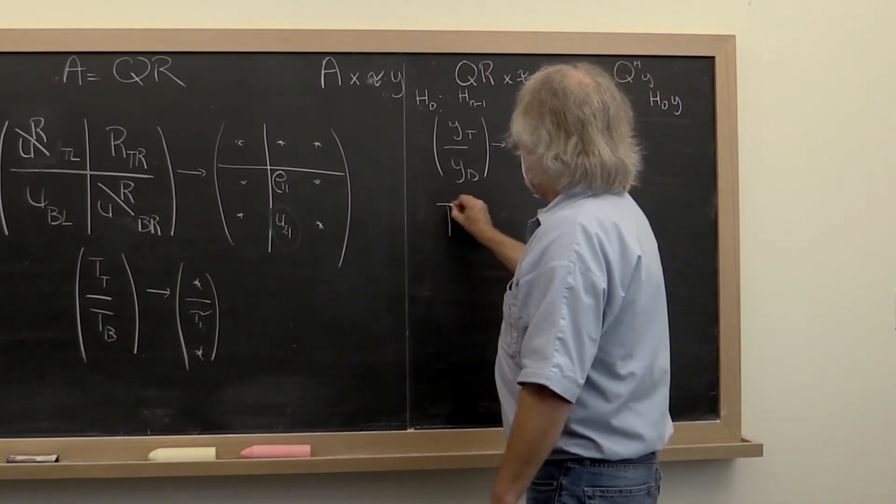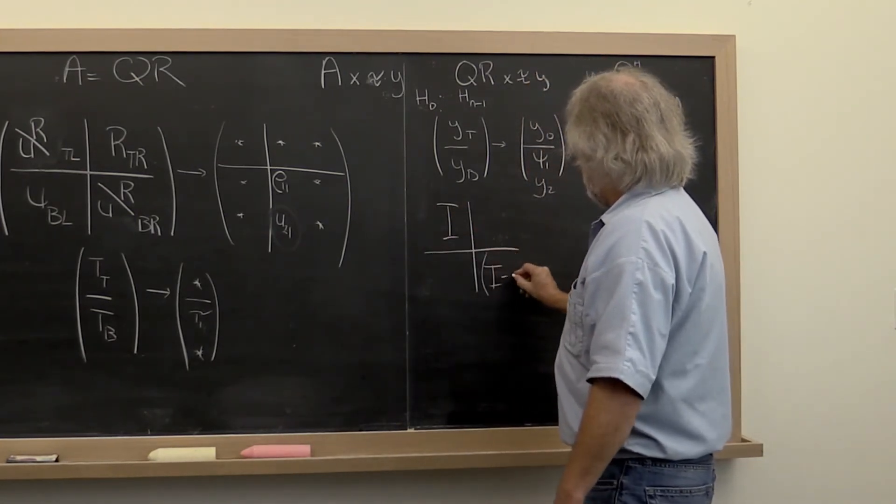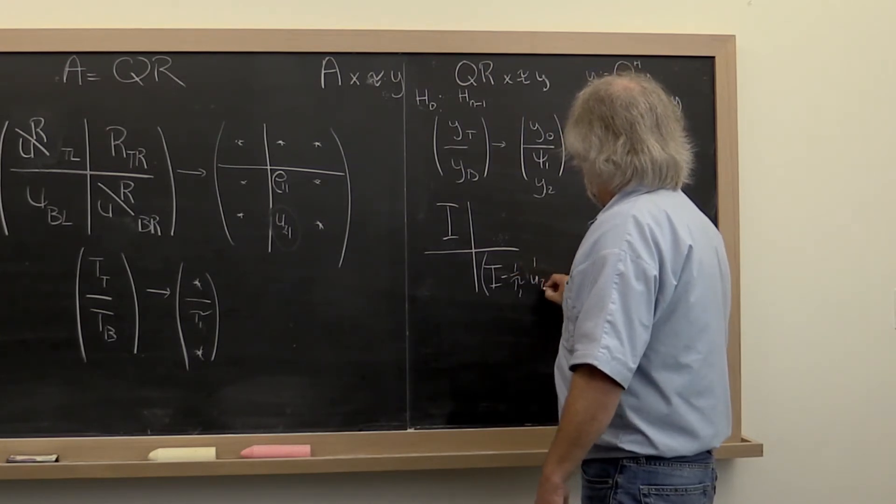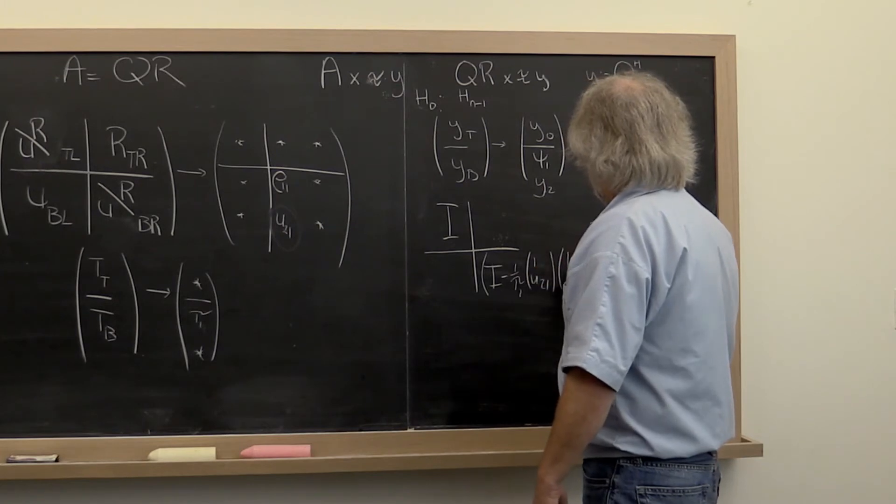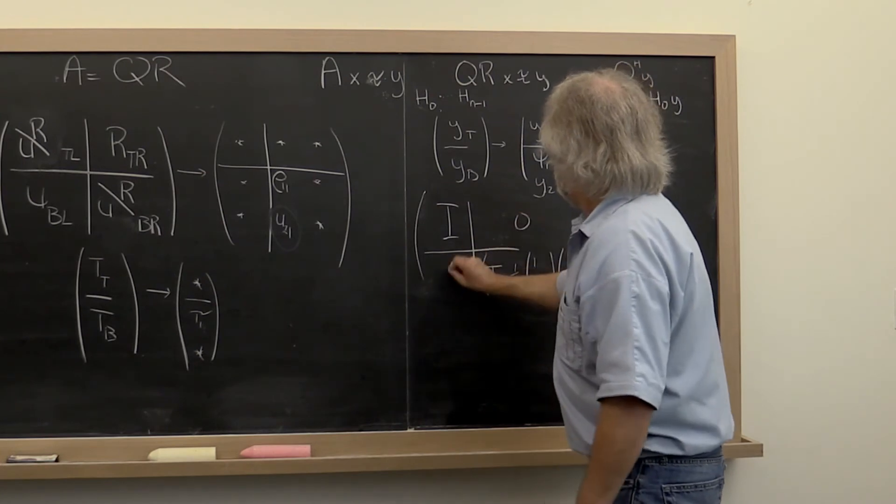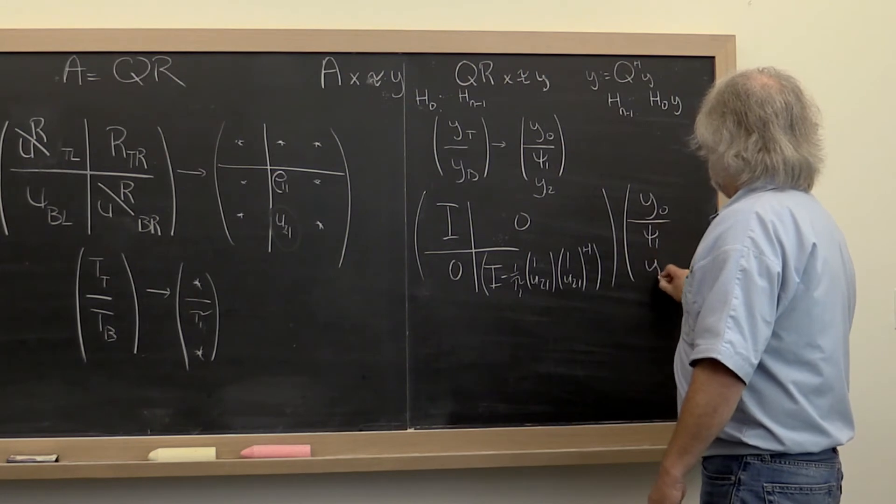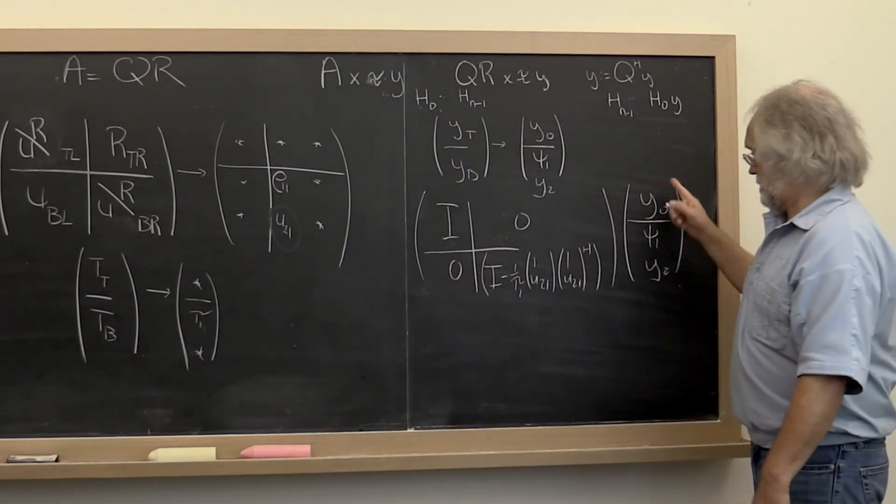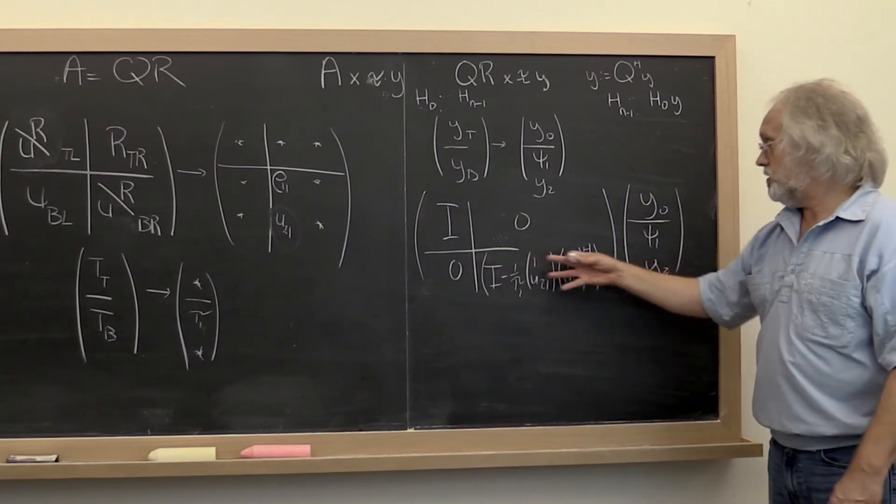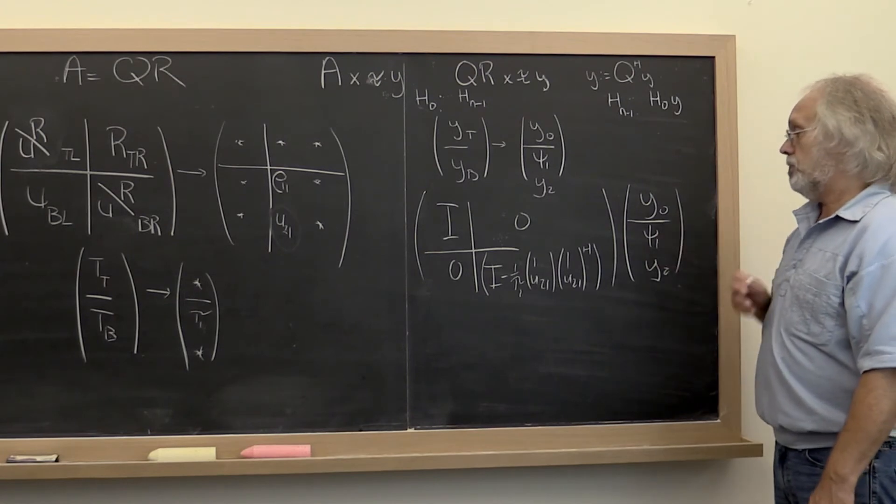And what you then need to do in the current step is apply this Householder transformation to vector Y0 with psi1 and Y2 exposed. And what does that mean? We just need to apply this Householder transform to this part of the vector.